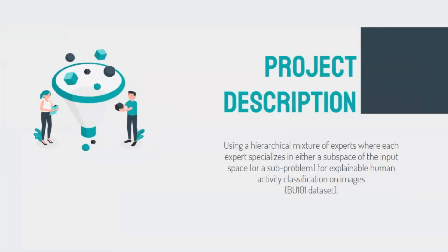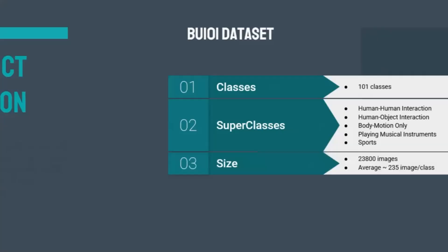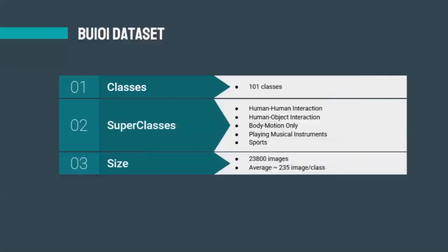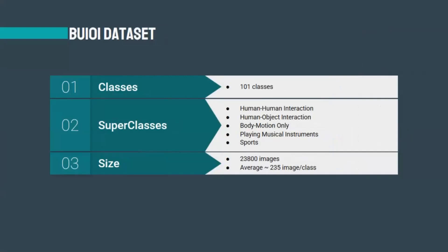For that we will use the BU101 dataset. The Boston University dataset BU101 is the largest web action image dataset today. It was collected from web sources such as Google and manually filtered for the correct label for every image. It has 101 classes divided into five main super classes: human-human interaction, human-object interaction, body motion only, playing musical instruments, and sports. It has a large size of 23,800 images, averaging around 235 images per class.